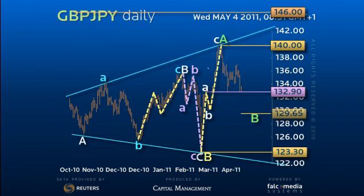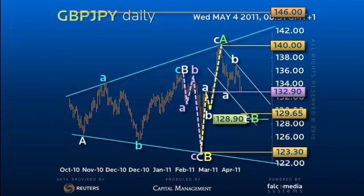Well, 129.65 is the 61.8% and C equals A is 128.90. So as this next drop, however sharp, as it fades below 129.65, a break back through the 132.90 pivot point should be the trigger for recovery to re-challenge the 137-140 highs.